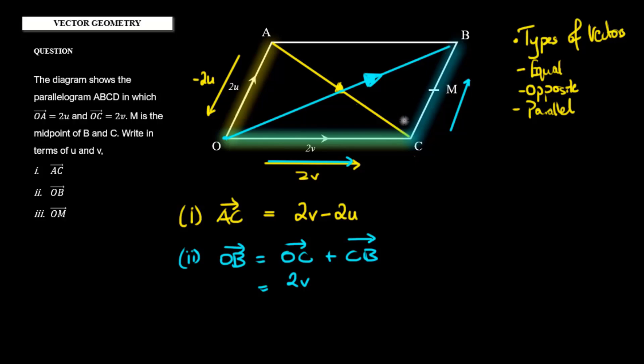Well, remember that we know in a parallelogram, these parallel sides will be equal. So that tells me that OA is equal to CB. So since vector OA is going to be equal to vector CB, that means CB must be equal to 2u, because we know that OA is 2u. Therefore, vector OB is 2v plus 2u.